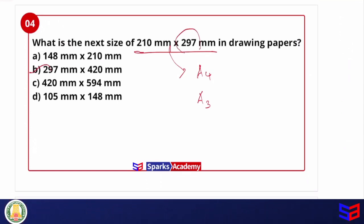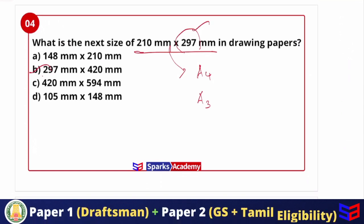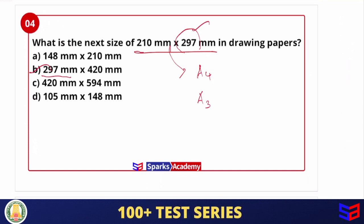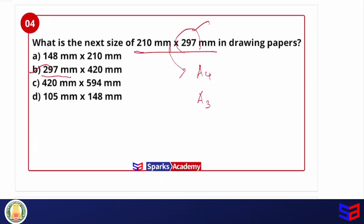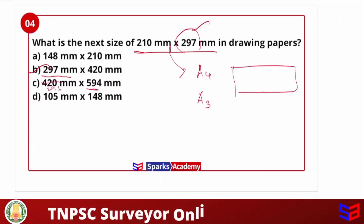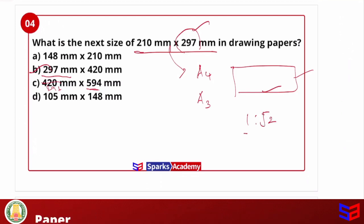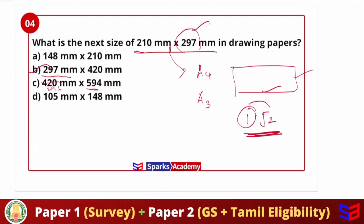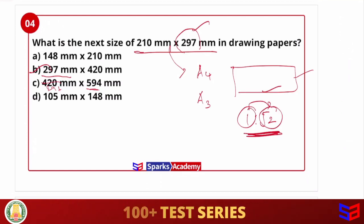If you go from 210 × 297, the next standard sheet size uses the 297 mm dimension as the shorter side. The ratio between sheet sizes is 1 to root 2. Knowing one side allows you to determine the other side easily.